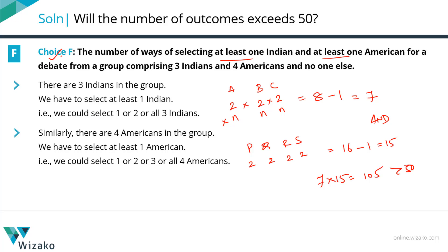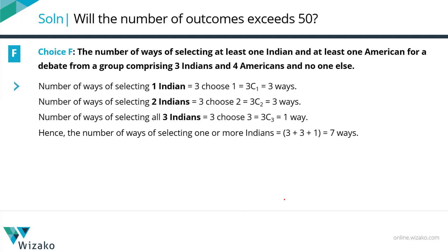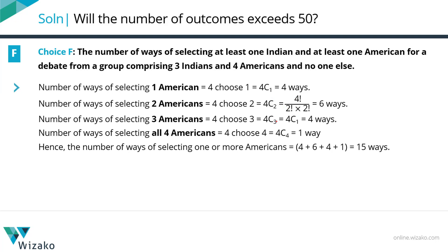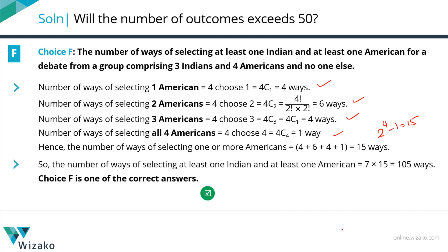An alternative approach: for Indians, 3C1 + 3C2 + 3C3 = 3 + 3 + 1 = 7 ways. For Americans, 4C1 + 4C2 + 4C3 + 4C4 = 4 + 6 + 4 + 1 = 15 ways. Total = 7 × 15 = 105 — same result. So choice F is confirmed as one of our answer options.